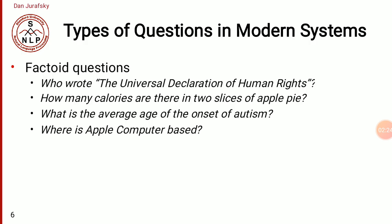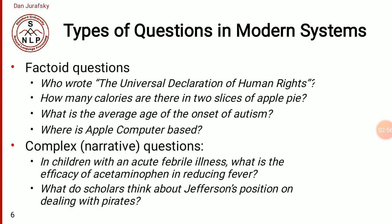These question types in modern systems are called factoid questions, where something is a fact. For example: Who wrote the Universal Declaration of Human Rights? How many calories are in two slices of apple pie? What is the average age of onset of autism? What is Apple computer based on? These are fact questions with fixed answers. There are also complex narrative questions, like: 'In children with an acute febrile illness, what is the efficacy of acetaminophen in reducing fever?' and 'What do scholars think about Jefferson's position on dealing with spirits?'